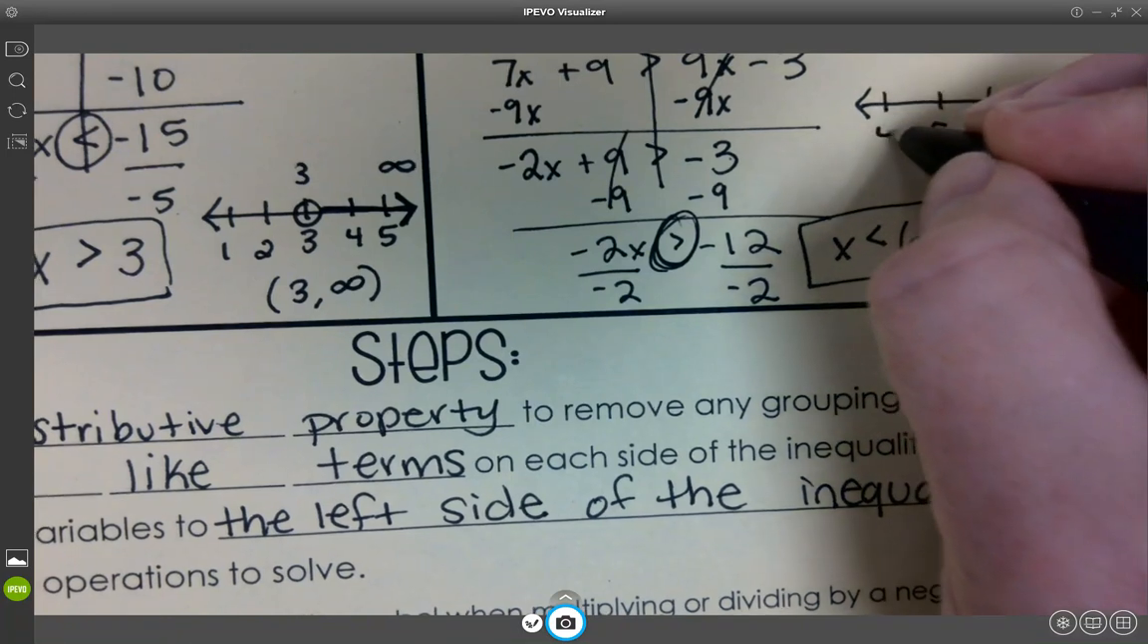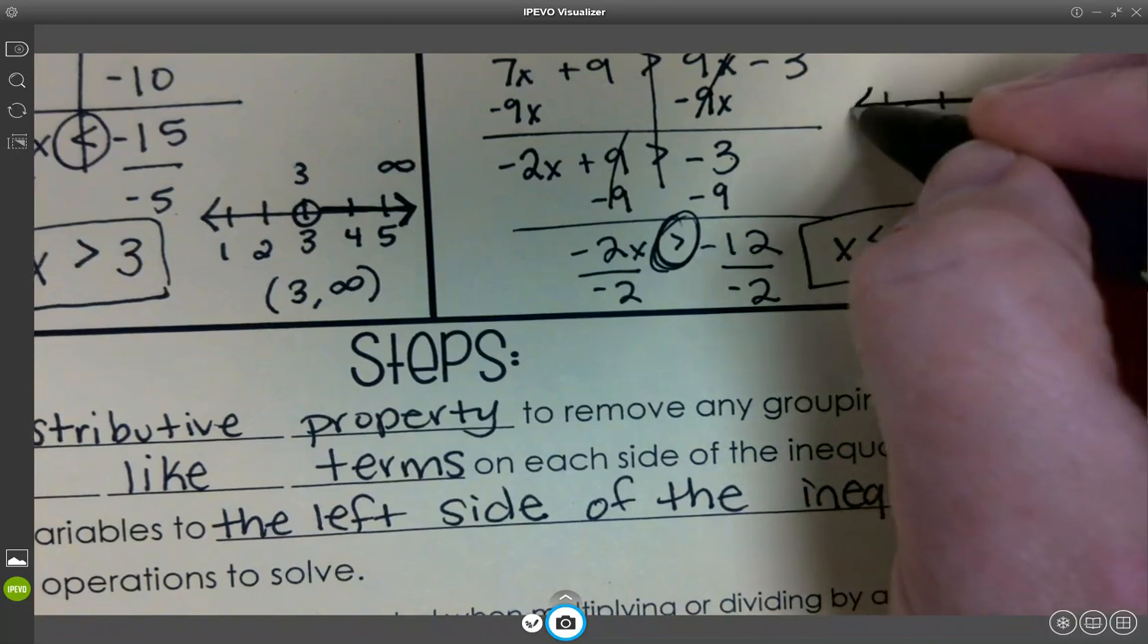Draw your number line. Open or closed? Open. And then which direction? Left. Less than left. Open, left. There we go. Negative infinity to 6. So you always read it from left to right, write the numbers, and then that helps you write the interval. Negative infinity to 6.